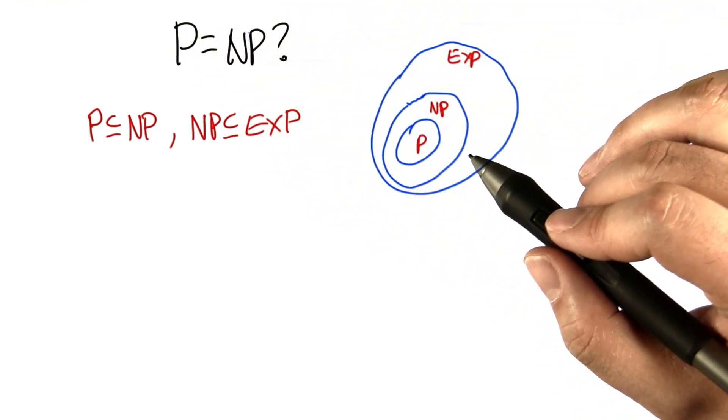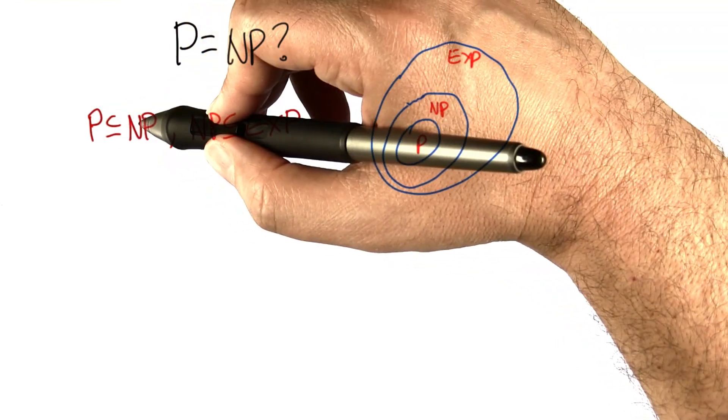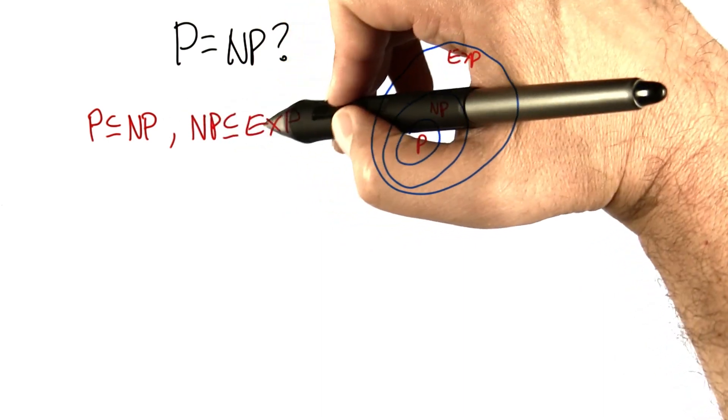And in particular, here's what we actually know. This is true. We know that every problem that's in P is in NP, and every problem that's in NP is in EXP.